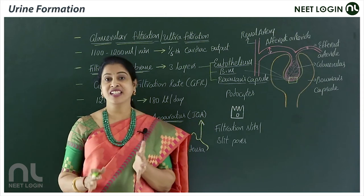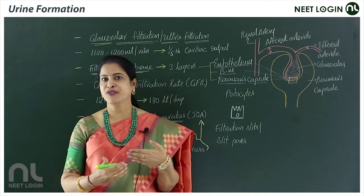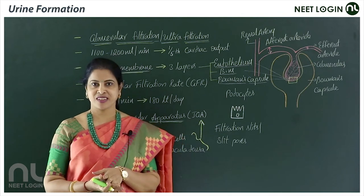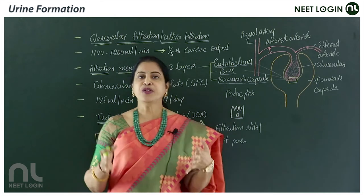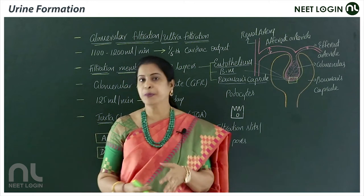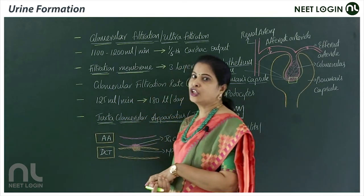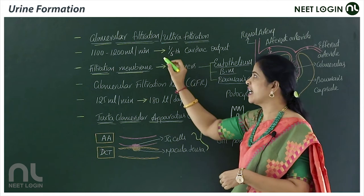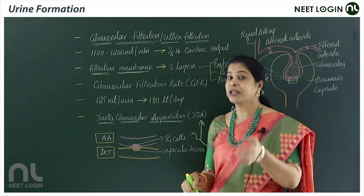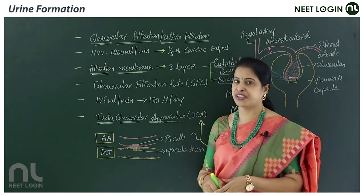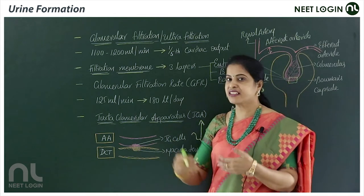Moving on to the very interesting and important topic of this chapter: the elimination of excretory products, and how urine is formed in our body. Urine formation includes three processes: glomerular filtration, reabsorption, and secretion. Glomerular filtration is also referred to as ultrafiltration — I will justify that statement once we step into the concept.